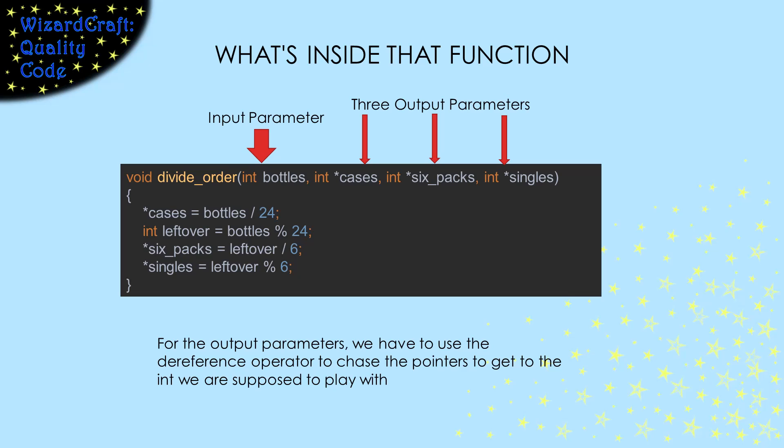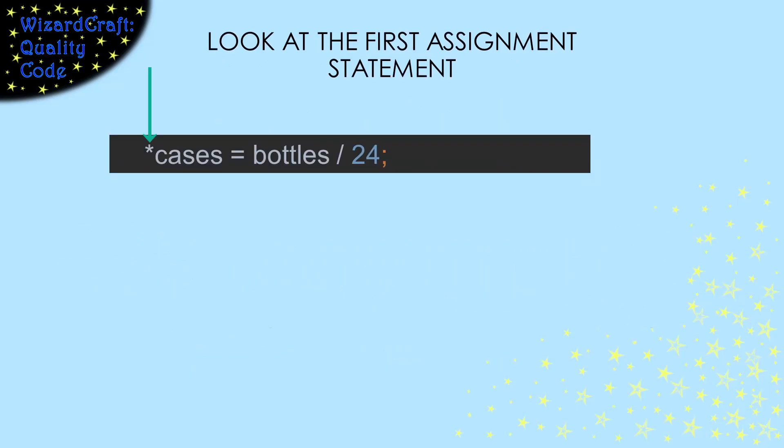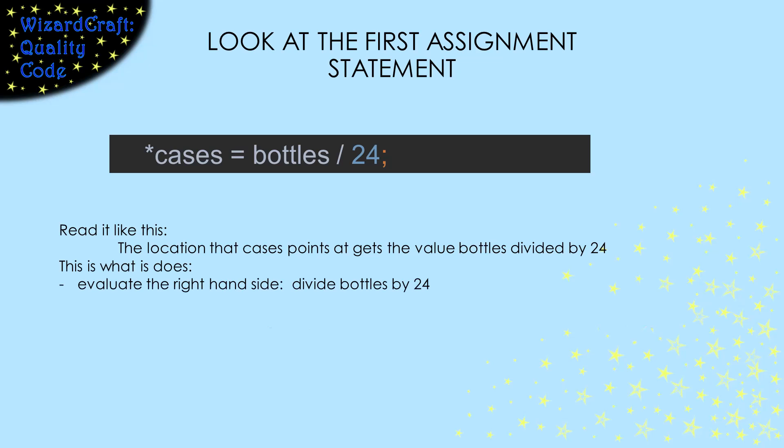Now that we've looked at how those variables get passed, let's look at how we use them to make our calculations. Because our output parameters are pointers, we have to use the dereference operator to get the ints that we're supposed to be playing with. Let's look at that first line very carefully. The asterisk at the beginning is the dereference operator. So when I read this, I say, the location that cases points at gets the value bottles divided by 24. It's an assignment statement, so it evaluates the stuff at the right-hand side. Bottles is just an int. The slash is just integer division. It'll evaluate to 2. Nothing magic there.